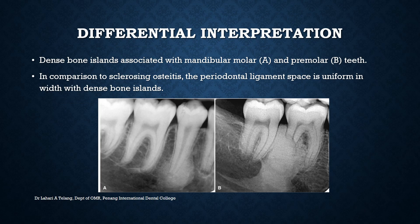A differential interpretation for condensing ostitis would be dense bone islands, seen as idiopathic areas of sclerosis that do not require any treatment. In comparison to sclerosing or condensing ostitis, the PDL space is uniform in width and there is no pulp involvement.